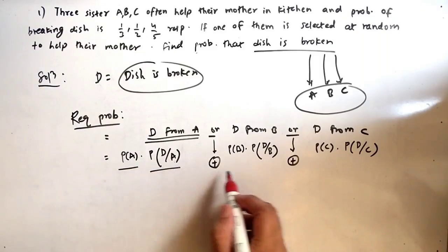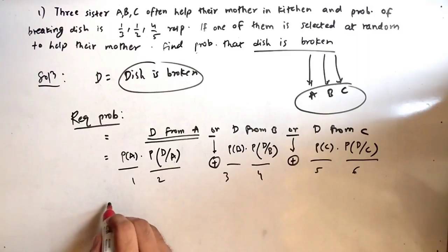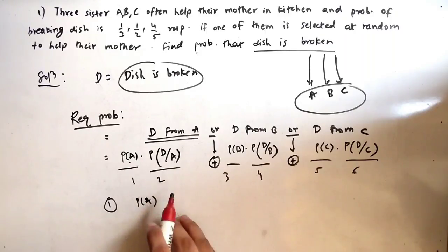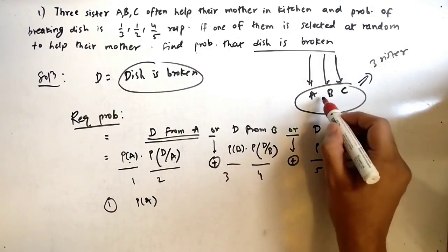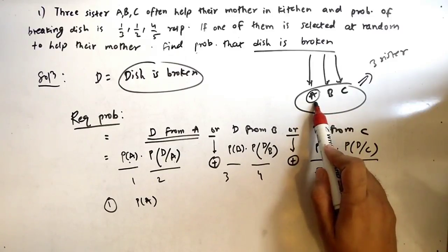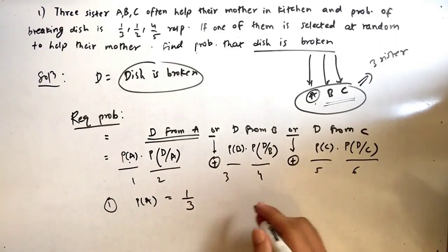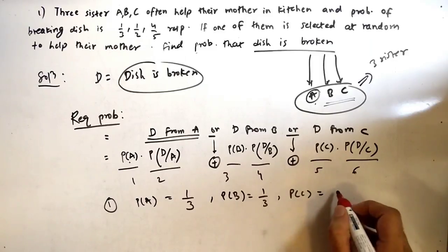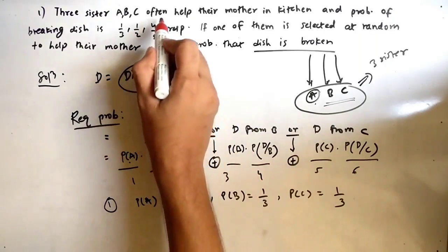Now let's find all six values. Since we have three sisters, the probability of selecting A is 1/3, selecting B is 1/3, and selecting C is 1/3. For P(D|A), P(D|B), and P(D|C), these are already given in the question. The probability of breaking a dish is 1/3, 1/2, and 4/5 respectively, meaning for A, B, and C.